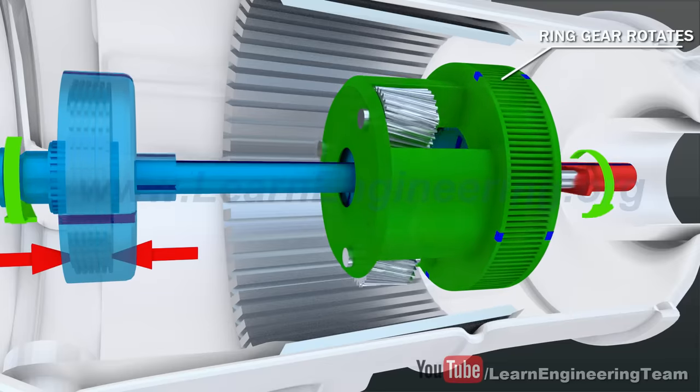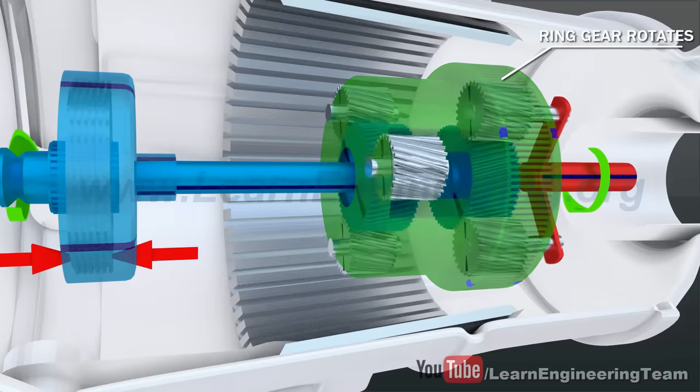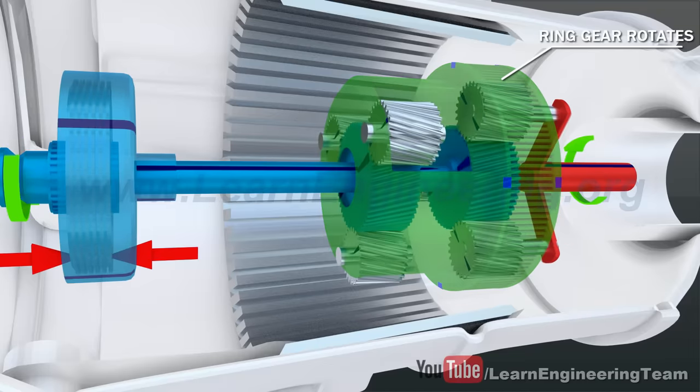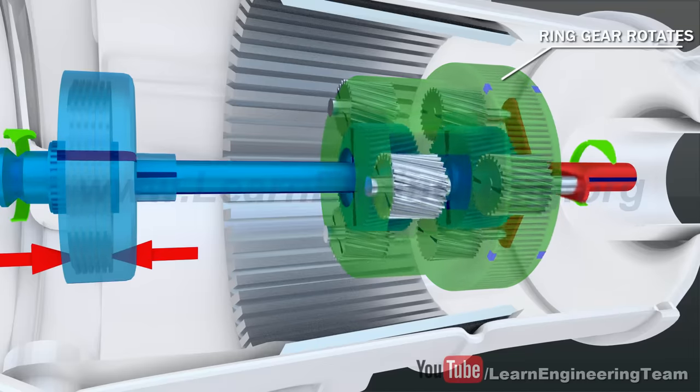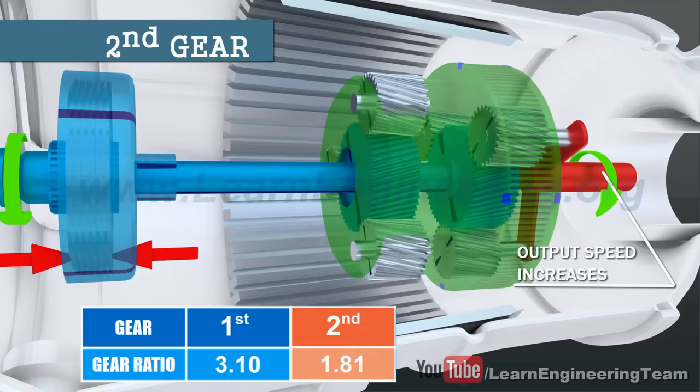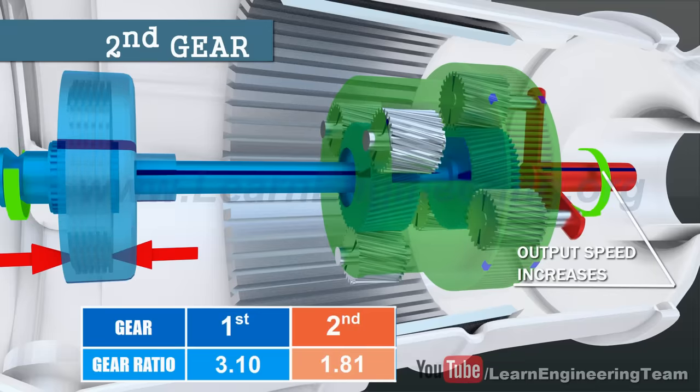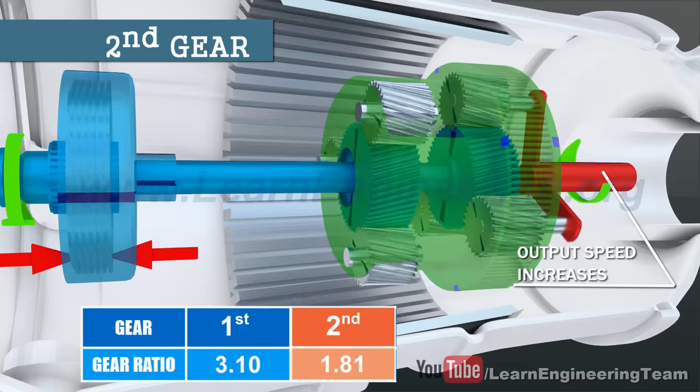Thus, at the output set, the situation is similar to that of the first gear, except that here, the ring gear will rotate as well. This means that the speed of the output planet carrier will increase. This is the second gear of the transmission.